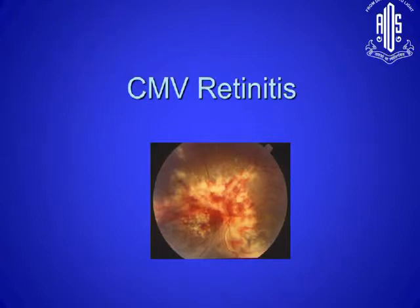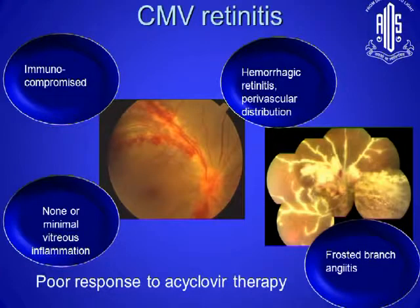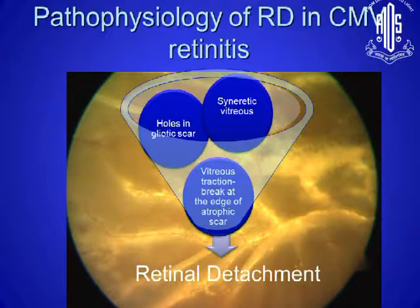Let's go to CMV retinitis, which is not very common nowadays. Because of the awareness of HIV and treatment, we see patients coming to the clinic and being referred to us. Typically here the vitreous is very clear, and we usually see an immunocompromised patient with HIV. Because of good HAART treatment, we actually see them less. However, retinal detachment does occur in patients because you have gliotic scars, holes in the gliotic scar, the atrophic vitreous adding to the combination, retraction, and breaks in the atrophic retina leading to retinal detachment.